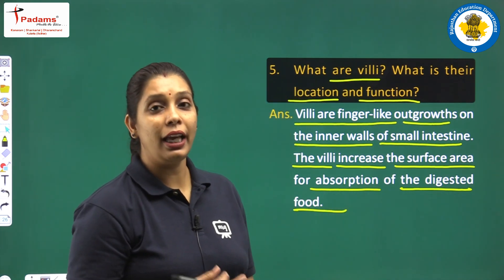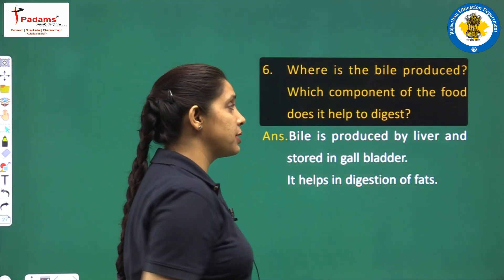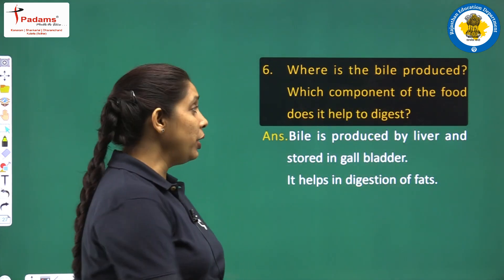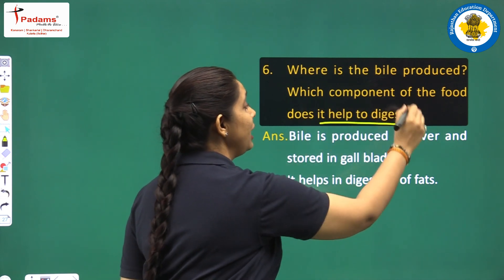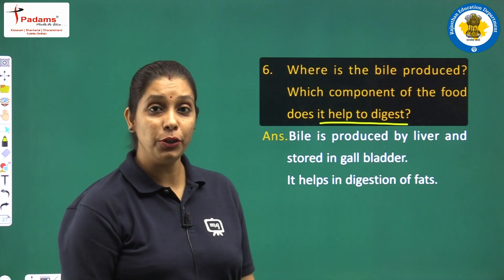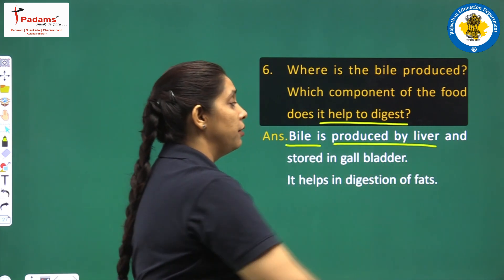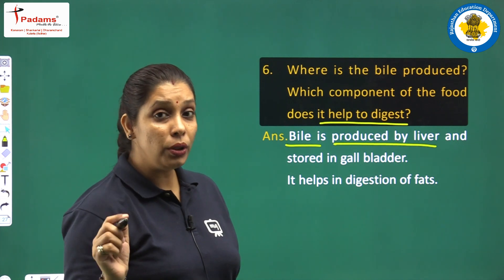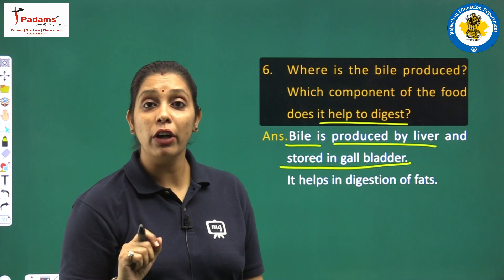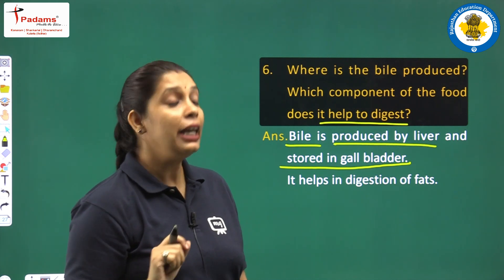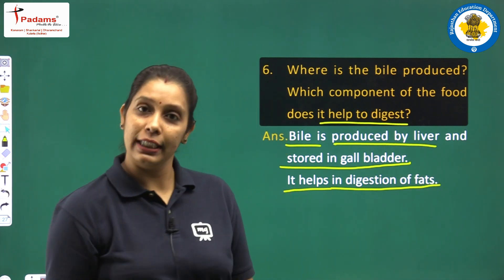Our next question: where is bile produced? Which component of food does it help to digest? Bile is produced by the liver and stored in the gall bladder. The main function of bile juice is that it helps in the digestion of fats.